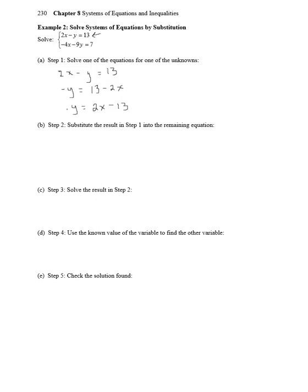Now we are going to substitute this equation we just got in for y in the second equation of our system. We have negative 4x minus 9y, and for y, we are going to substitute in 2x minus 13. And that needs to equal 7.